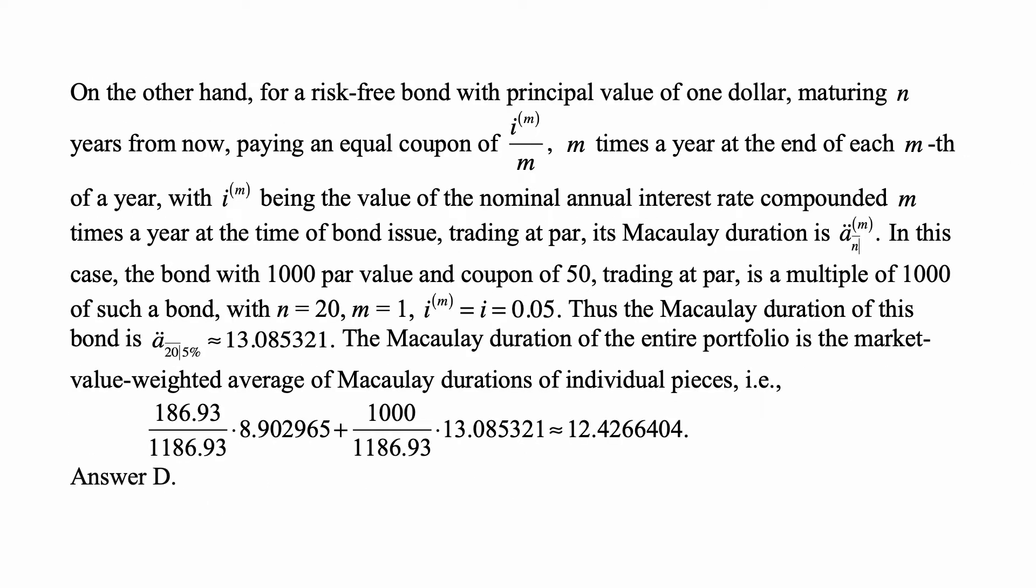On the other hand, for a risk-free bond with principal value of $1, maturing n years from now, paying an equal coupon of i^(m)/m, m times a year, at the end of each m-th of a year, with i^(m) being the value of the nominal annual interest rate compounded m times a year at the time of bond issue trading at par, its Macaulay duration is ä_n|^(m).